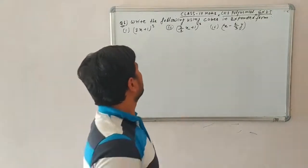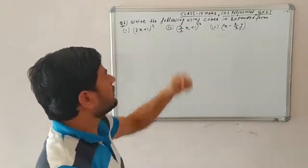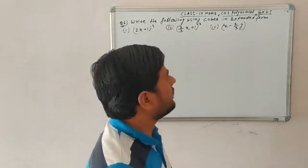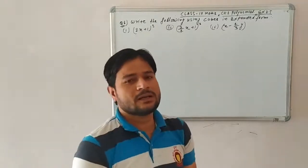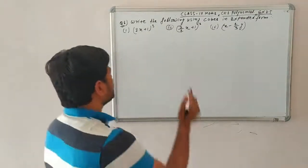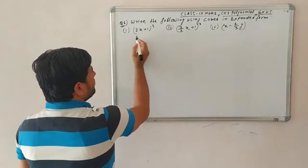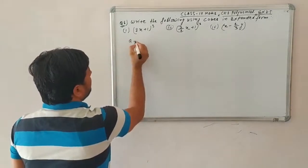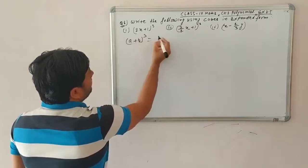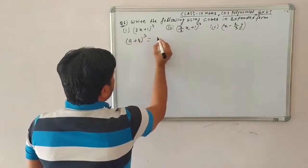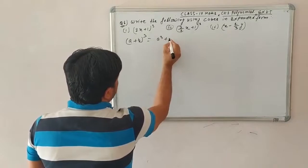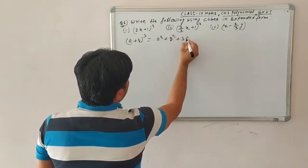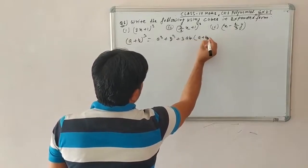So class, we will do question number six: write the following using cubes in expanded form. To expand, first you must know about the identity of (a+b)³. That is: a³ + b³ + 3ab(a+b).